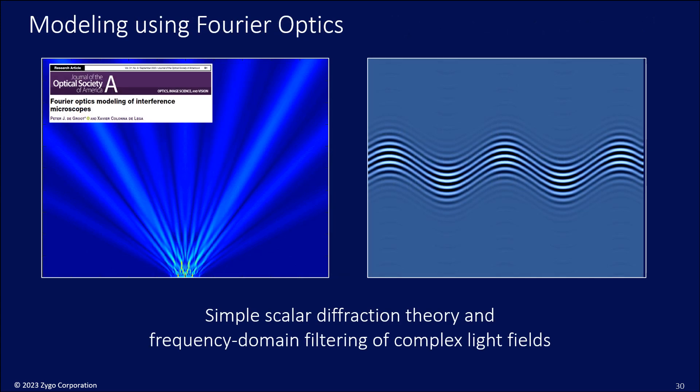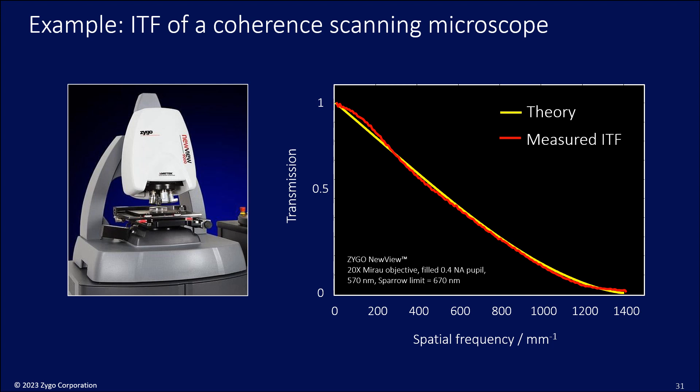For example, we often use at Zygo a Fourier optics model of interference microscopy that looks at scalar diffraction theory and sees how the different diffracted orders are propagated through the optical system in order to simulate interference patterns like you see on the right-hand side for sinusoidal surface in white light interferometric techniques. Here's an example where we've compared the theoretical prediction of scattering theory for the ITF with the measurement of the instrument transfer function using a sharp step. And we see a really good agreement here. So these are different approaches. We can experimentally determine the ITF. We can theoretically determine the ITF, but there is another question that's raised by all of this of whether we need the ITF at all.